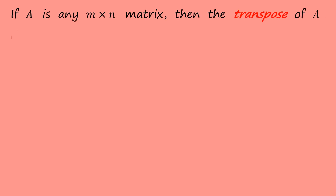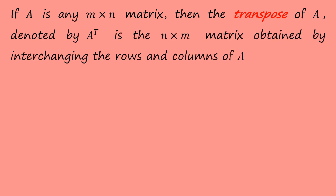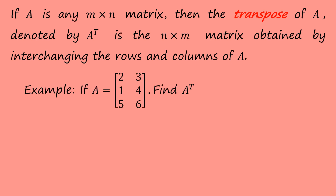If A is any n by n matrix, then the transpose of A, denoted A^T, is the n by n matrix obtained by interchanging the rows and columns of A. For example, if A is a 3 by 2 matrix, then A transpose is a 2 by 3 matrix, obtained by interchanging the rows to become columns.